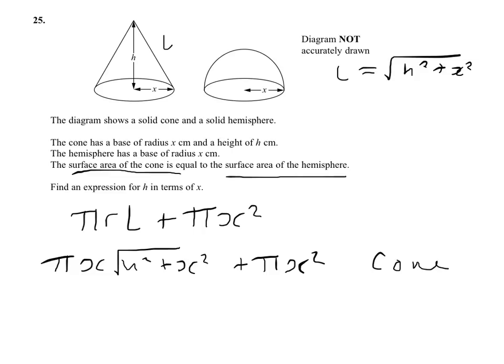Now for the hemisphere, the surface area of a sphere would be 4 pi r squared. So the surface area of the hemisphere then will be 2 pi r squared. That's for the curved part.